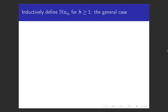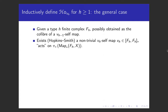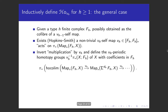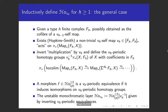We can do this procedure for every positive natural number H. Given the type H finite complex FH, possibly obtained as the cofiber of a VH-1 self-map, by a very deep result of Hopkins and Smith, there exists a non-trivial VH self-map that acts on the homotopy groups of the pointed mapping spaces from FH to X. Inverting this action, we can define the VH periodic homotopy groups of X with coefficients in FH. We say a morphism of simply connected P-local homotopy types is a VH periodic equivalence if it induces isomorphisms on VH periodic homotopy groups. The infinity category of VH periodic homotopy types is the localization of the simply connected P-local homotopy types at VH periodic equivalences. This is also known as the unstable monochromatic layers.